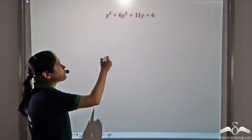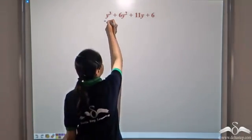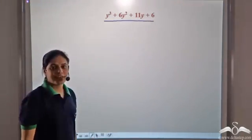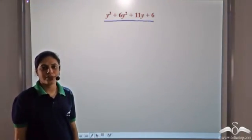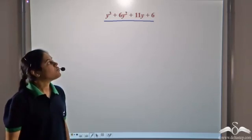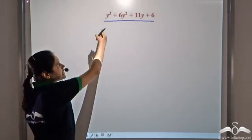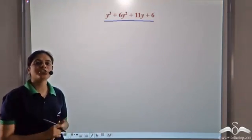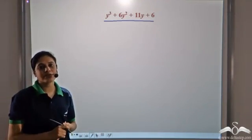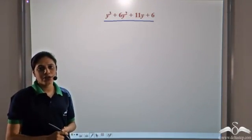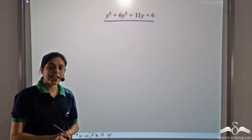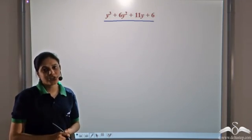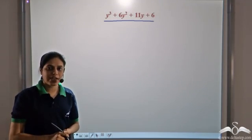We need to factorize this expression using the factor theorem. So we need to find the value of y at which this expression becomes zero. Let us try the hit and trial method.